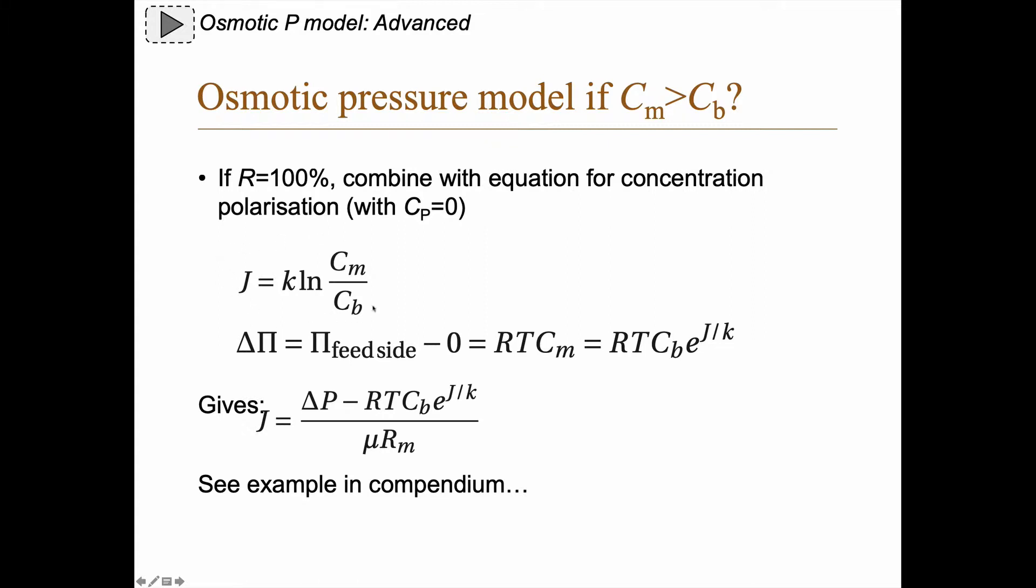The concentration polarization model gives us this simple equation: J equals the mass transfer coefficient k times the natural logarithm of C_m divided by C_b. Delta π will only be the osmotic pressure on the feed side since there is nothing in the permeate side, which means that delta π becomes RTC_m. We can use this equation to calculate C_m as C_b times e to the power of J divided by k.